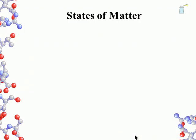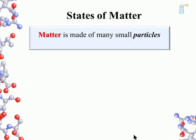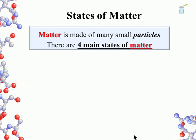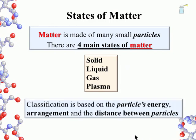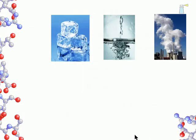On to states of matter. Matter is made up of many small particles, and we will get to those particles later on. There are four main states of matter: solid, liquid, gas, and plasma. At this level of chemistry, we usually just consider the first three states. The classification of a state is based on the particle's energy, arrangement, and the distance between particles. We can use water as a demonstration of states.